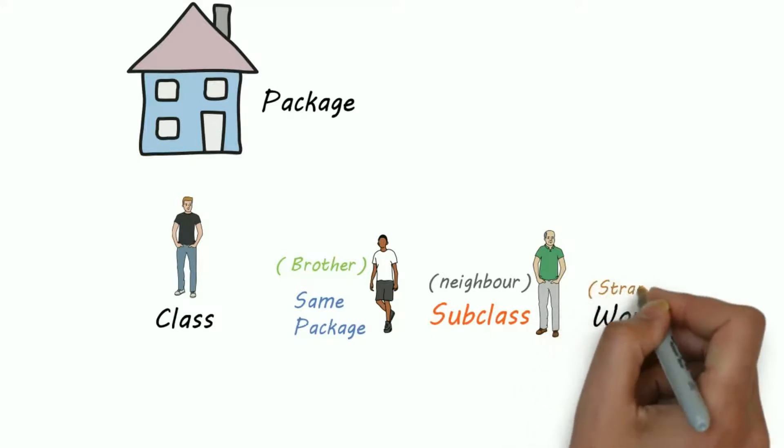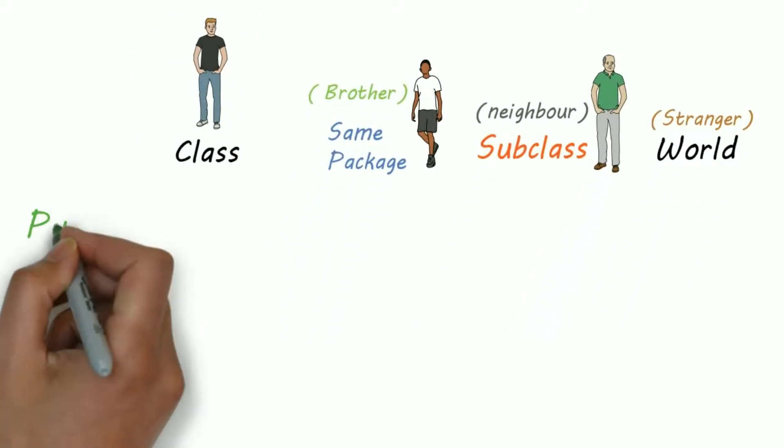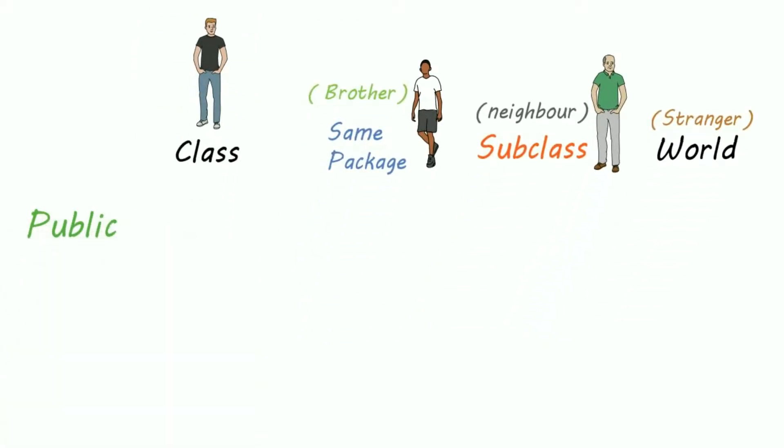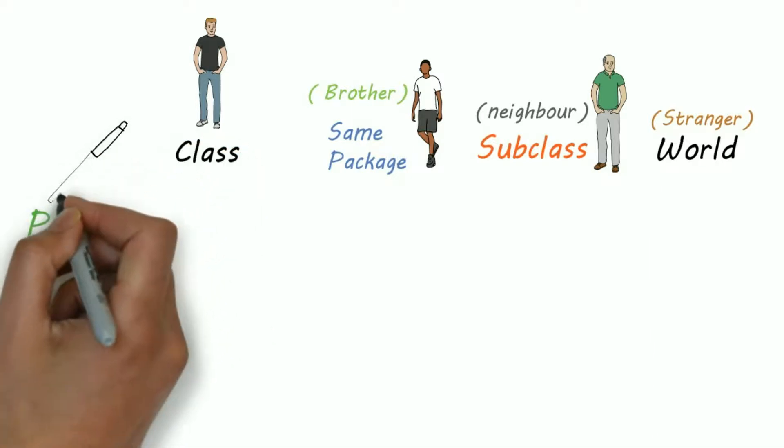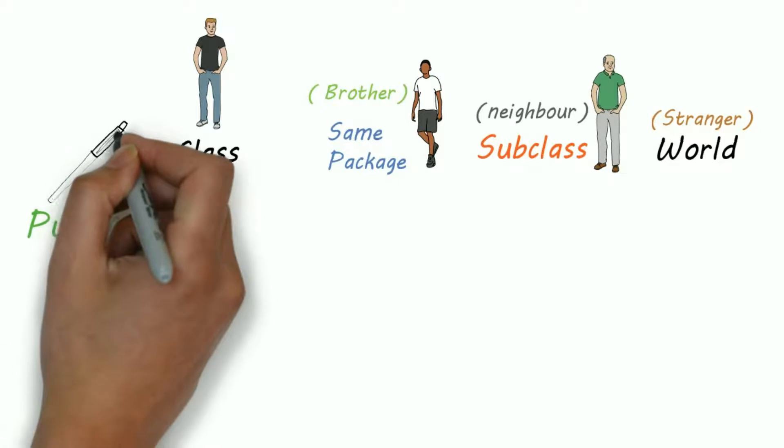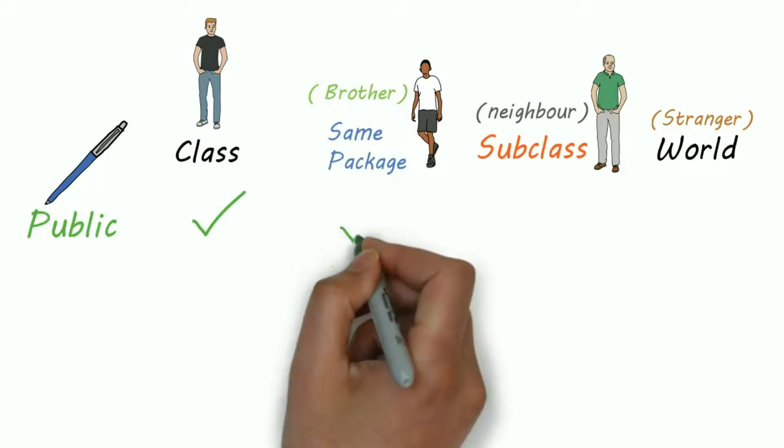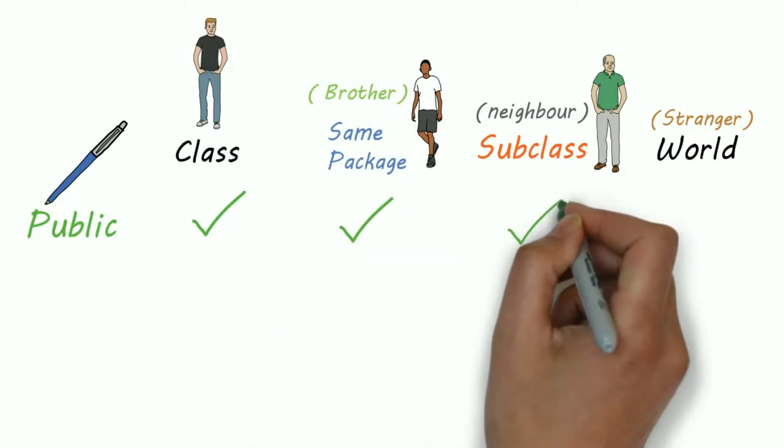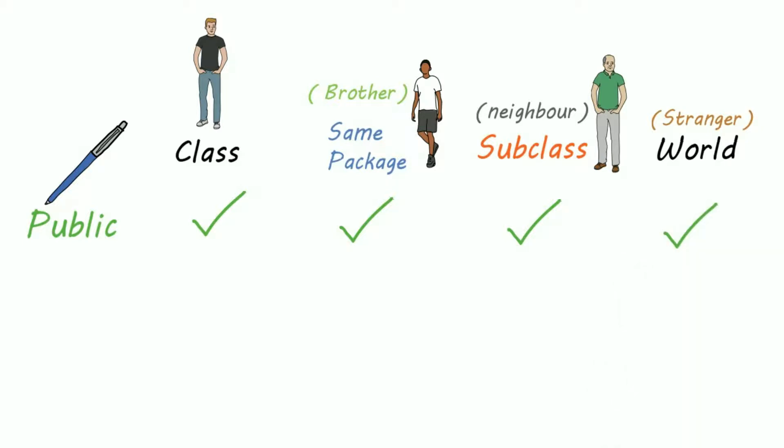Now you have lots of items in your house and you apply modifiers to each item. For example, public: a regular pen is like public. This means you can use it, your brother can use that pen, or if your neighbor or any stranger borrows your pen for some time, you won't have any problem with that because it's just a pen.